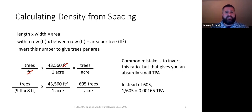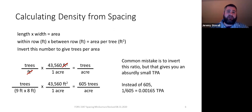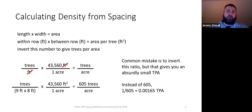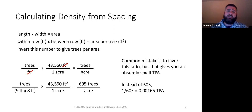One common mistake students make is accidentally inverting the fraction — taking 72 and dividing it by 43,560 instead of dividing 43,560 by 72. When you do that, you end up with 1 over 605, which equals 0.00165. That's an absurdly small number. With most planting densities in pine plantations in the south, we're in the 400 to 700 trees per acre range, so that's clearly a wrong answer. Go back and check if you made a mistake somewhere.